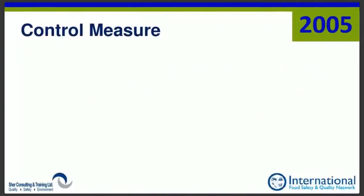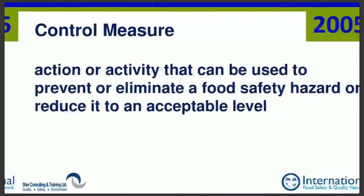In 2005, a control measure was an action or activity that can be used to prevent or eliminate a food safety hazard or reduce it to an acceptable level — not necessarily critical. We would map out all control measures, even those not going to be part of the critical control point system, including those that would be OPRPs or just regular control measures. That was the 2005 version. The new version says something different.